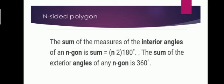So if we have a 9-sided, 10-sided, or 11-sided polygon with different numbers of sides, we have generated a formula for that. The formula for an n-sided polygon: the sum of the measure of interior angles of an n-gon is equal to (n minus 2) multiplied by 180. The sum of the exterior angles of any n-gon is equal to 360 degrees.